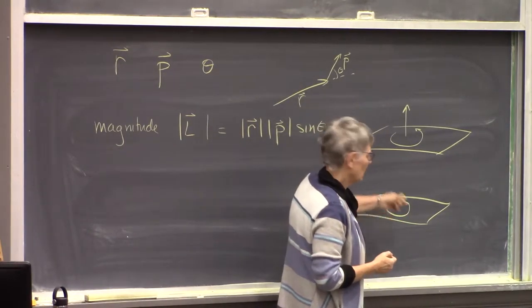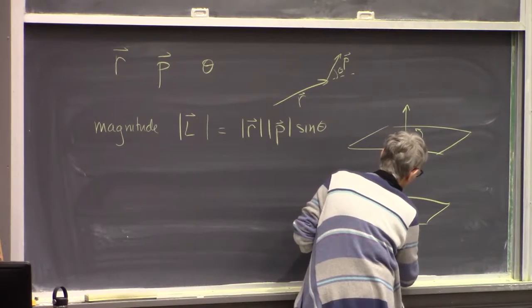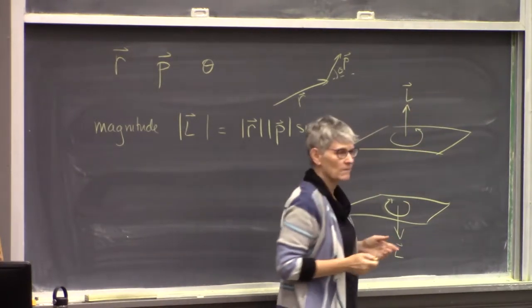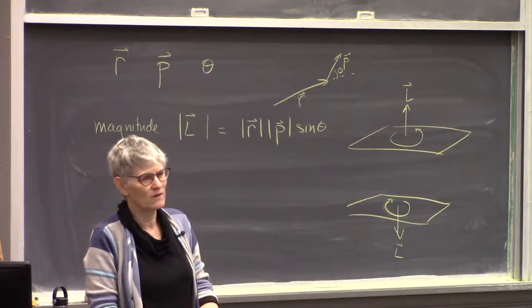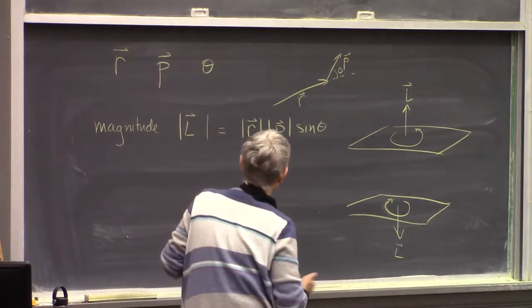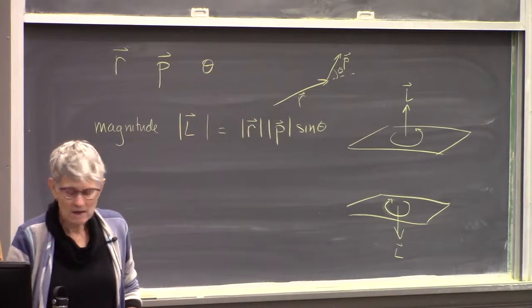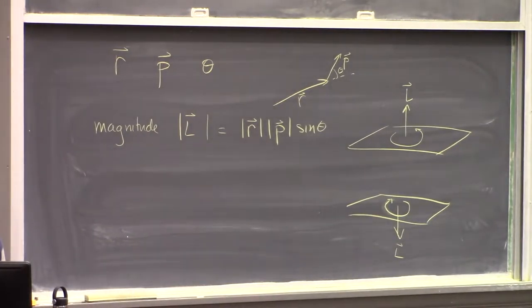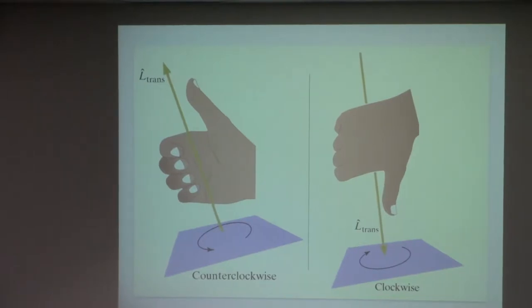If the orbit is counterclockwise, your thumb ends up pointing down — so the angular momentum would be in the negative direction. This is the right-hand rule, which we'll use in this chapter and again extensively in E&M next semester when discussing magnetic fields and forces. If we know the direction something is orbiting, we can use our right hand to find the direction of its angular momentum.